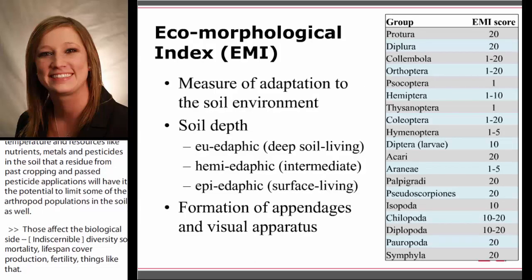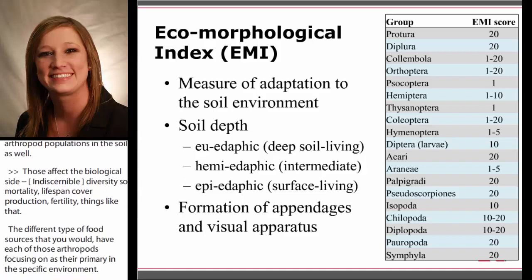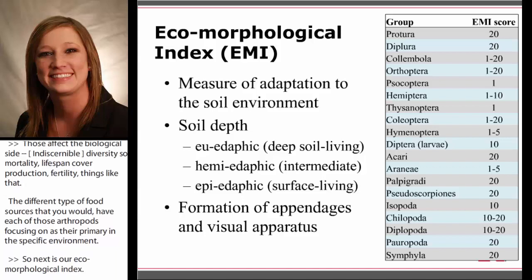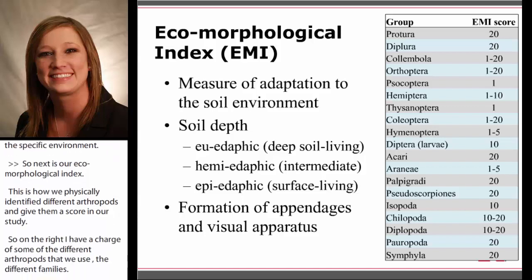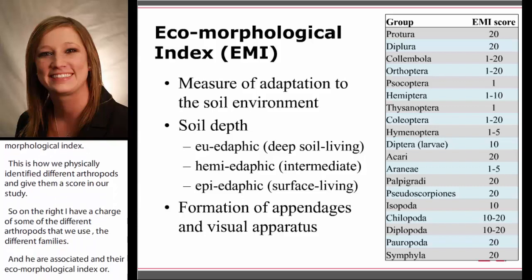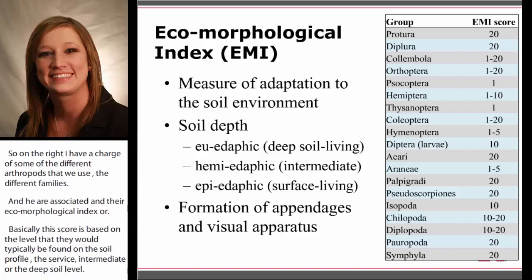Next is our ecomorphological index, and this is how we specifically identified the different arthropods and gave them a score in our study. On the right, I have a chart of some of the different arthropods we used, the different families, and their associated ecomorphological index score. This score is based on the level they would typically be found at in the soil profile — surface, intermediate, or deep — and then the different formation of appendages, visual apparatus, and pigmentation you would see for each family.